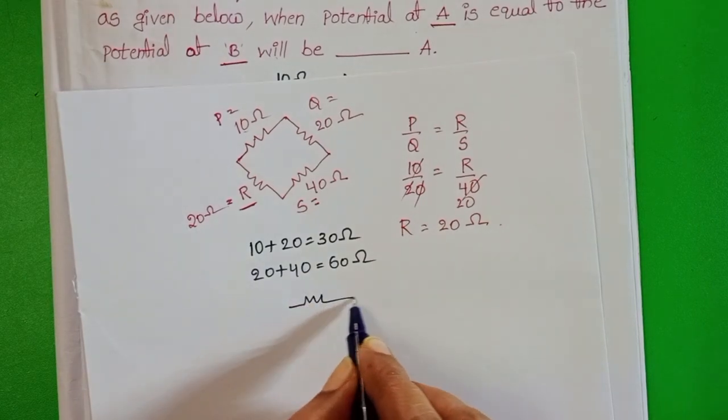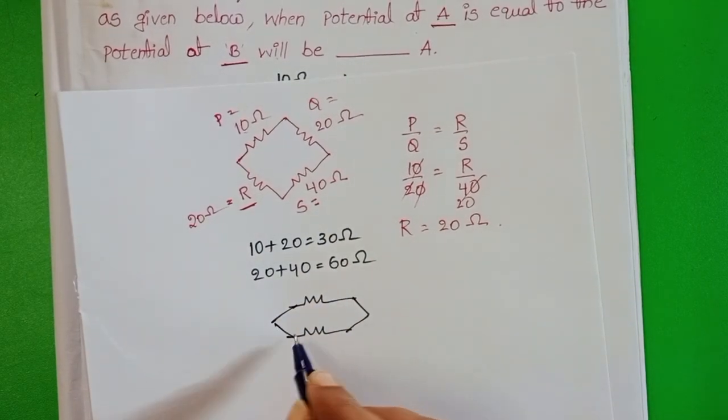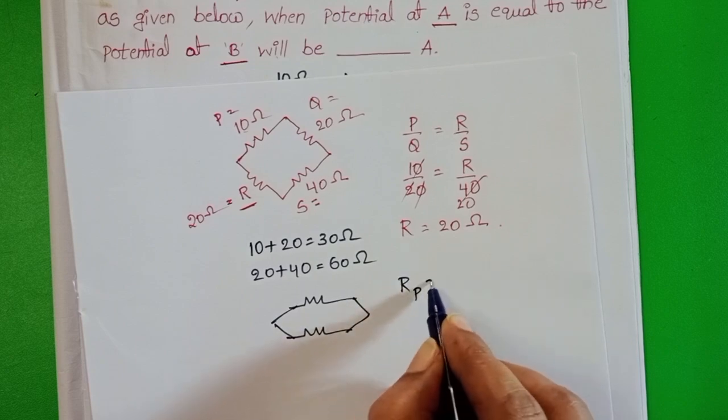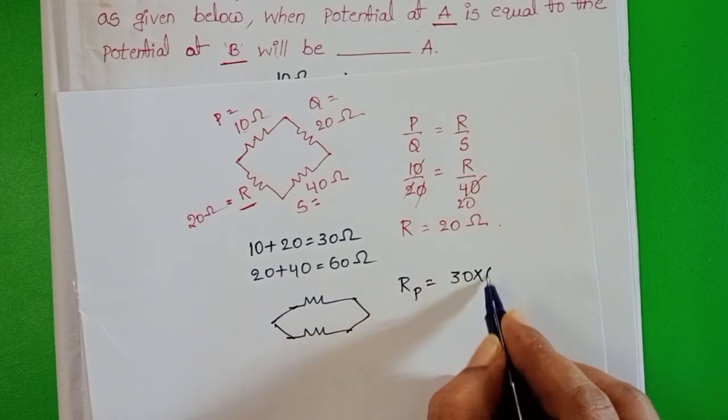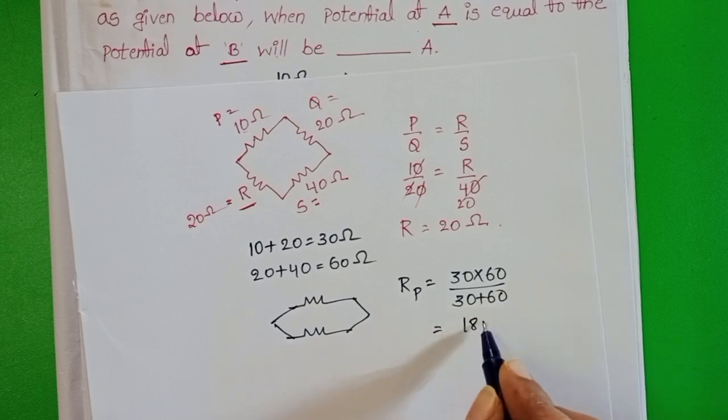30 ohm resistor and 60 ohm resistor. Now these two are connected in parallel. 30 into 60 by 30 plus 60.